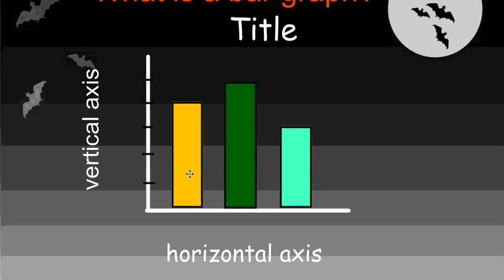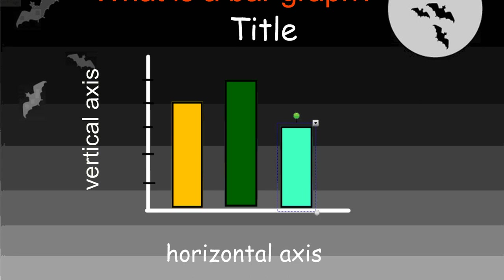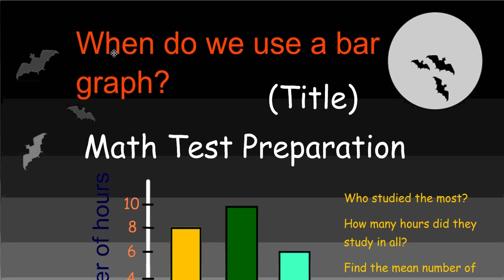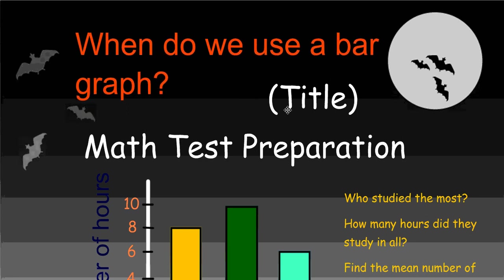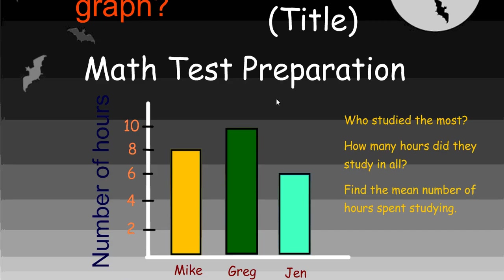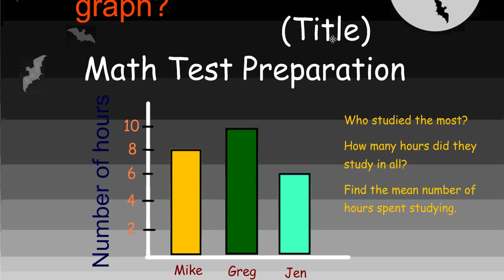They could be comparing types of shirts - yellow versus green versus blue. We use these to compare one thing to another. When do we use them? The most important thing to know is that we use a bar graph to compare different things. Later, we'll talk about the similarities to a histogram, but here we're focused on a bar graph. Again, we can use this bar graph to try to answer some of these questions.